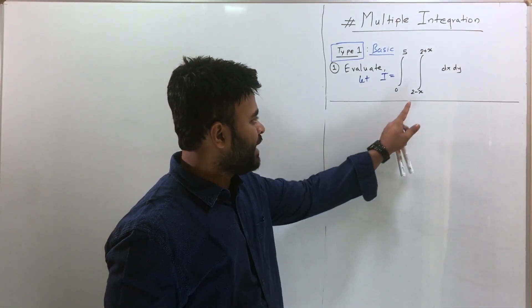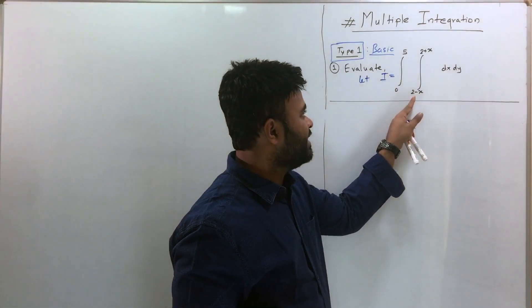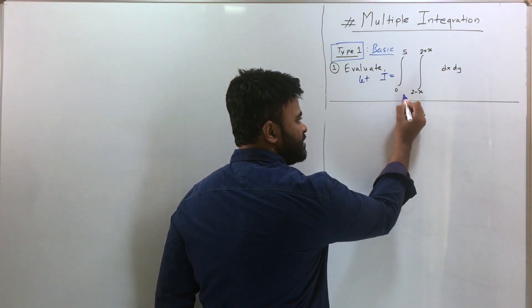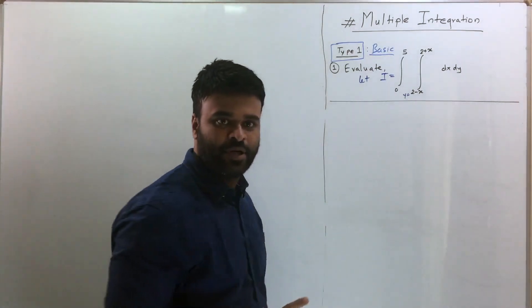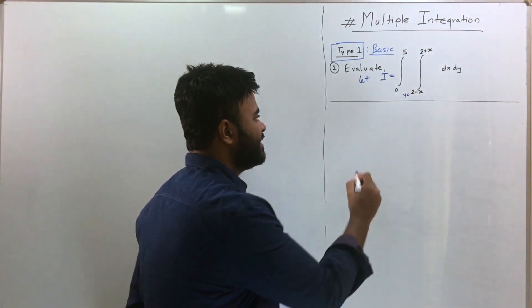What I mean is, if you look at the inner integral, the limits of the inner integral are written in terms of X. So when the limits are written in terms of X, they are the limits of Y. The inner integral is of Y and the outer integral of course is of X because there is only X and Y.